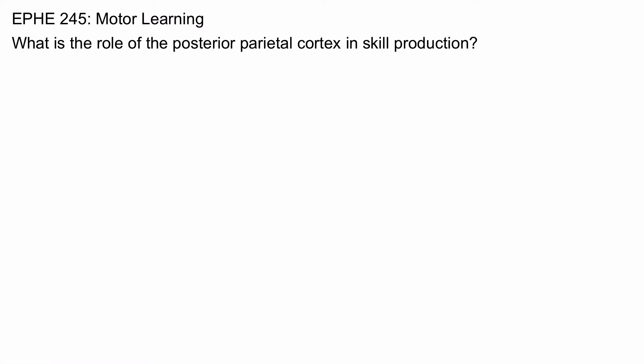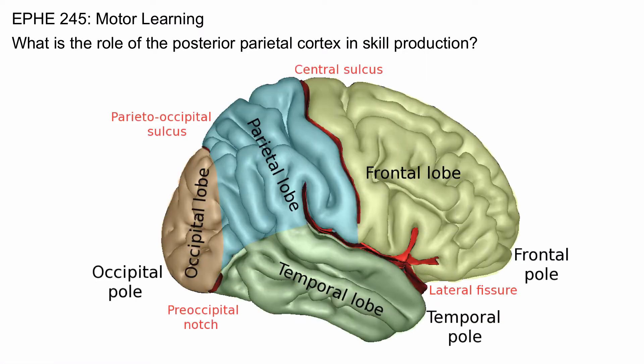What is the role of the posterior parietal cortex in skill production? The parietal lobe is a complex structure and does a lot of things to support motor production. In the anterior aspect of the parietal lobe, just beside the central sulcus, that's the primary sensory cortex. But what about the other parts of the parietal lobe?